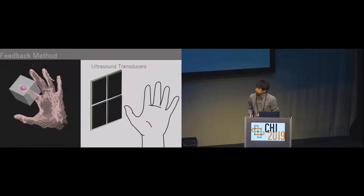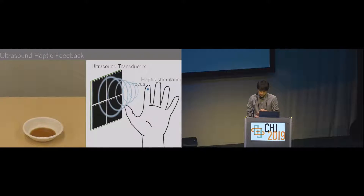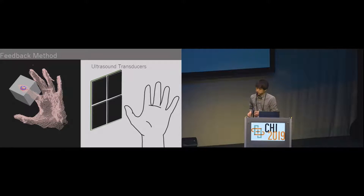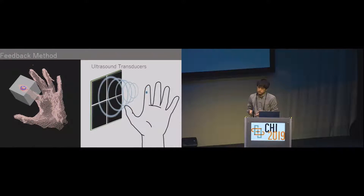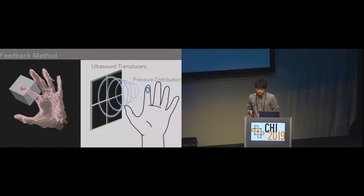Our system not only creates a focus but moves the focus at a high speed to provide more information to the user. Our system calculates the cross-sectional shape of the finger and the object, and by moving the focus around this cross-section, a time-averaged pressure distribution is generated on the finger. This distribution changes according to the shape of the cross-section, so the user can estimate the contact state from the shape of the pressure pattern on the finger.